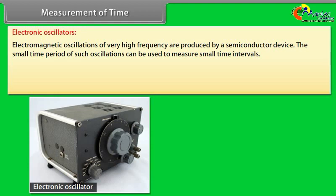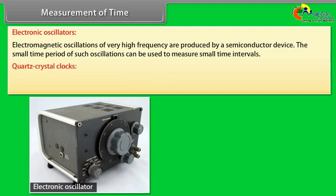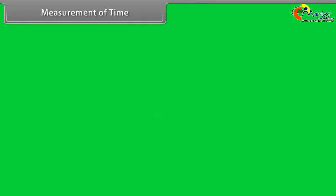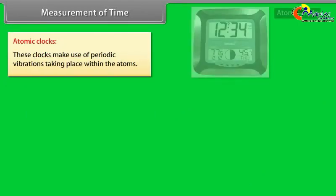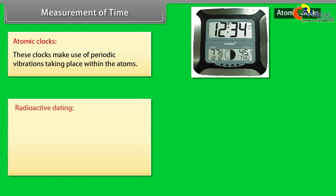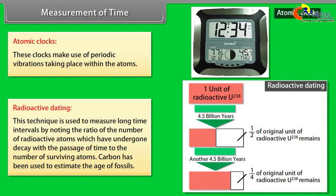The small time period of such oscillations can be used to measure small time intervals. Quartz crystal clocks: a quartz crystal shows piezoelectric effect. The oscillations produced can be used to measure time intervals. Atomic clocks: these clocks make use of periodic vibrations taking place within the atoms.